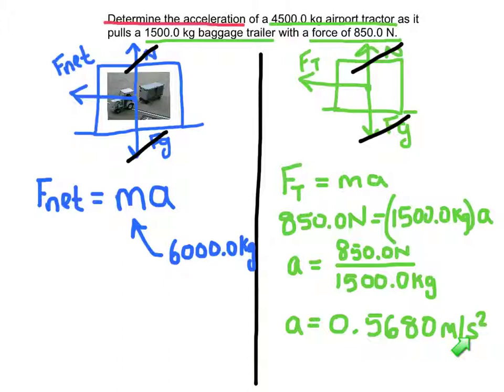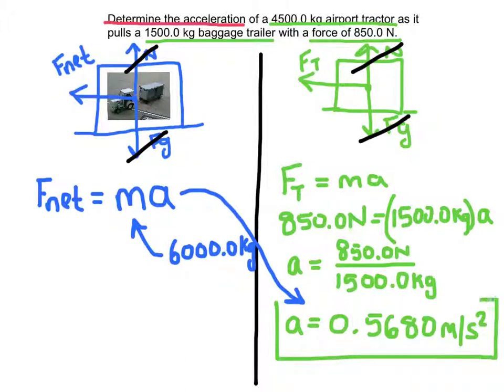Since these objects are connected, that acceleration is also the acceleration of the entire system. The question asks for the acceleration of the tractor, so we can conclude that 0.568 meters per second squared is the acceleration of both the trailer and the tractor.